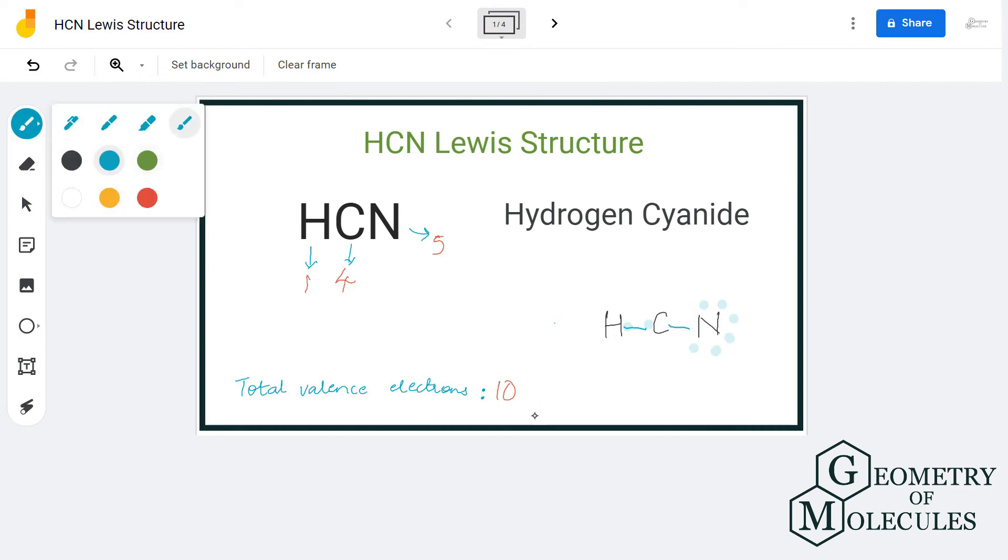But here as you can see, the octet of carbon is still incomplete, which means it is not a stable structure yet.